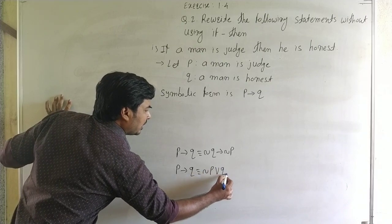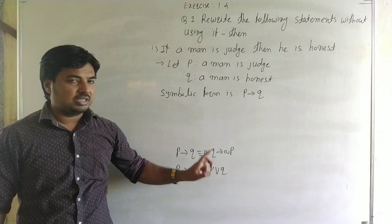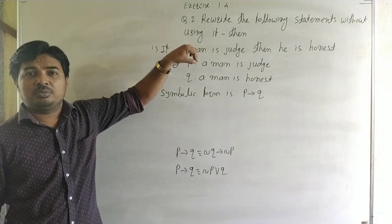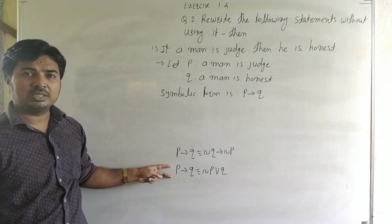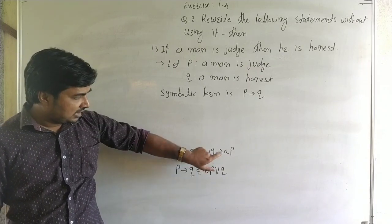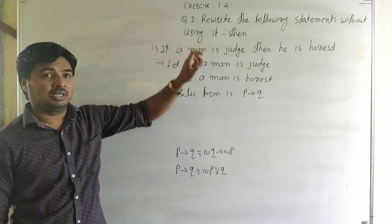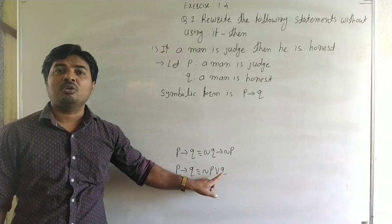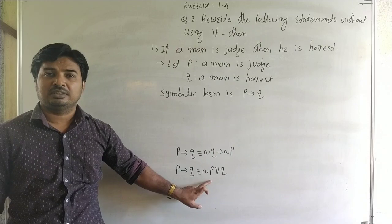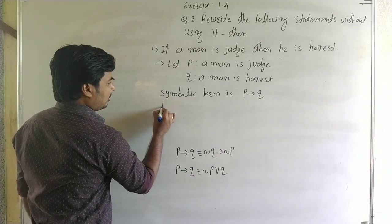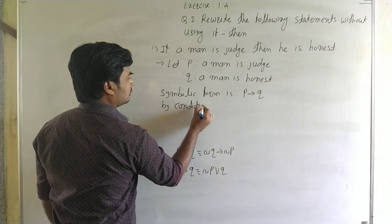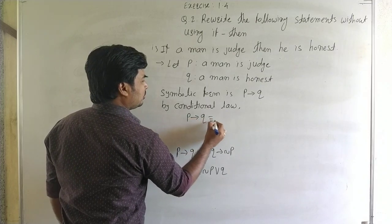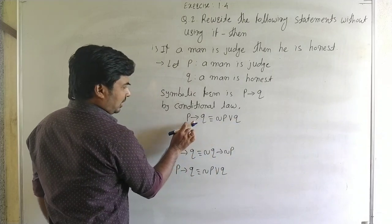We know that another conditional law states P implies Q is equal to negation P or Q, which is a disjunction. So without using if-then, the given statement P implies Q has an equivalent statement without implication: negation P or Q. By the conditional law, P implies Q is equal to negation P or Q.